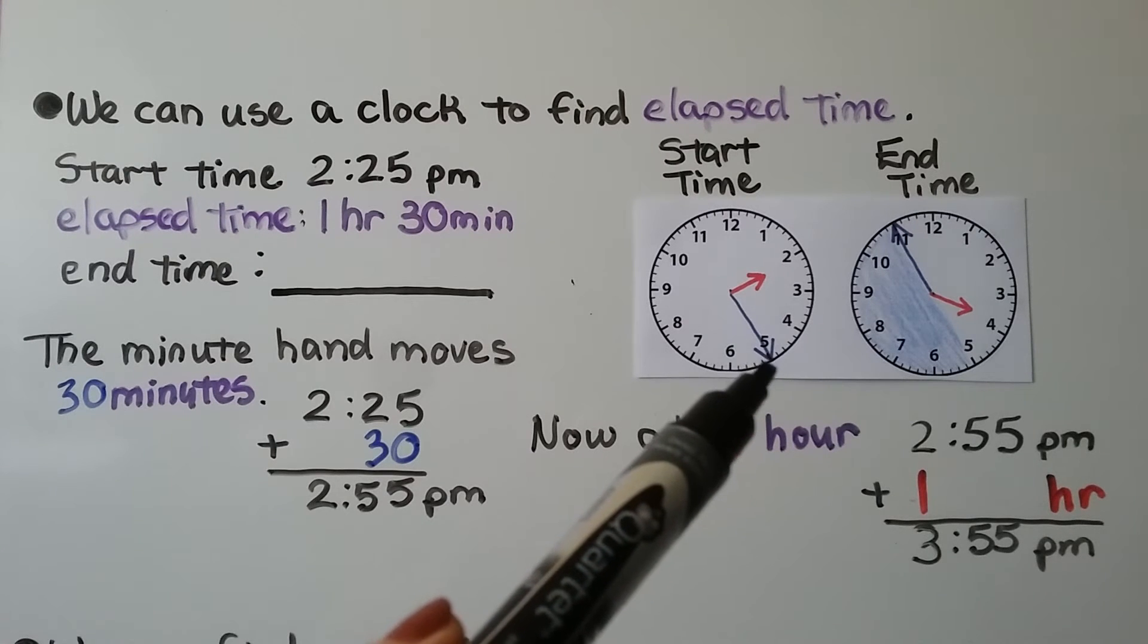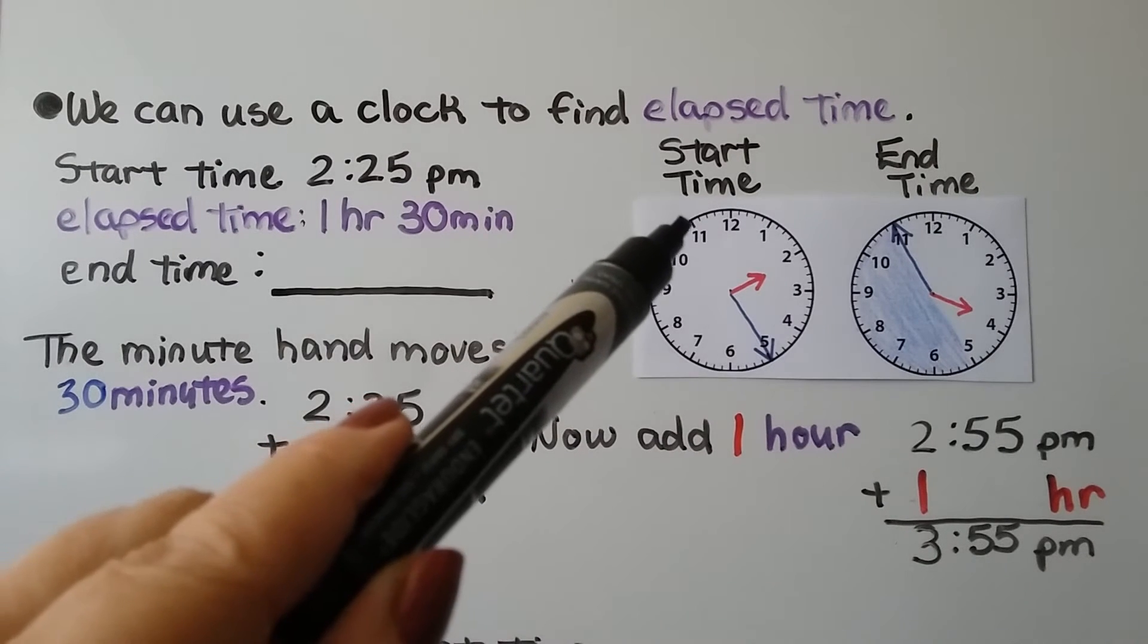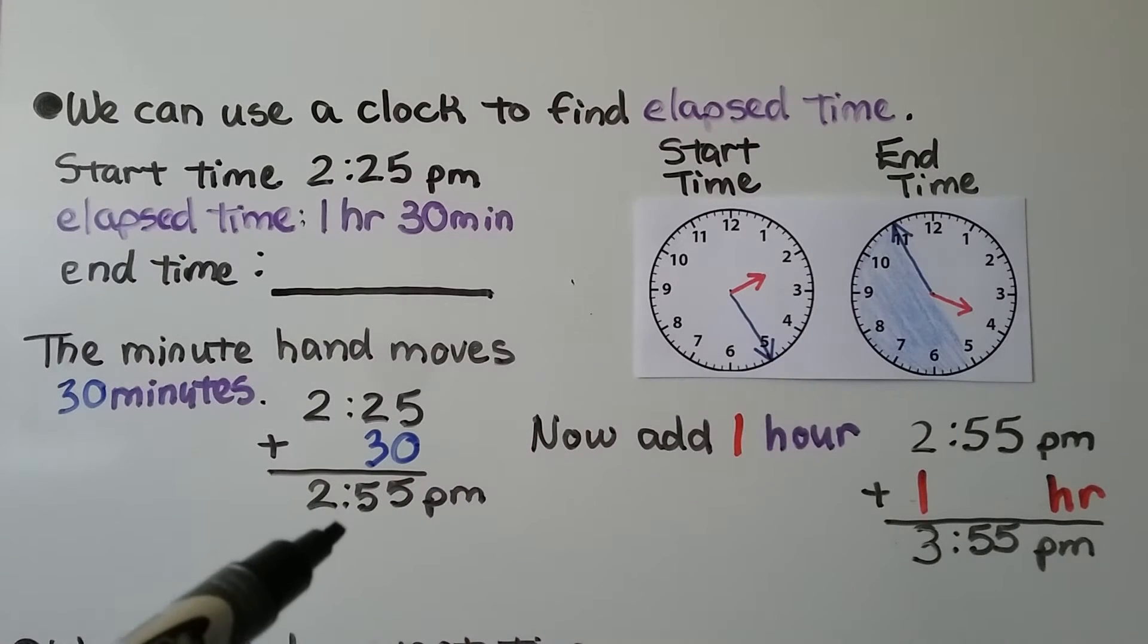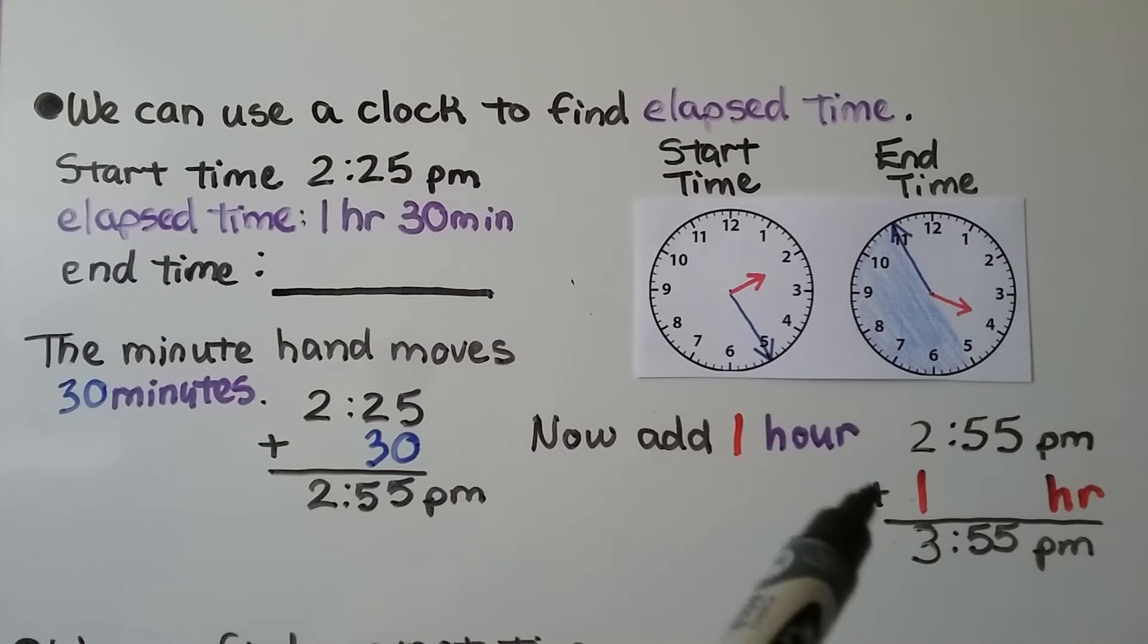The minute hand moves 30 minutes. It goes from 2:25 and if it moves 30 minutes, it's going to go halfway around, pointing to the 11. That's 2:55 PM. Now we add one hour. That brings us to 3:55 PM for our end time.